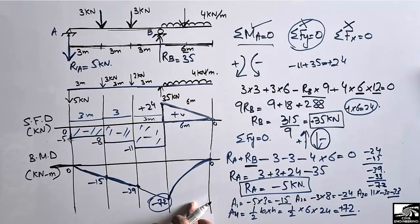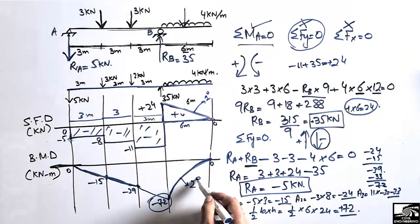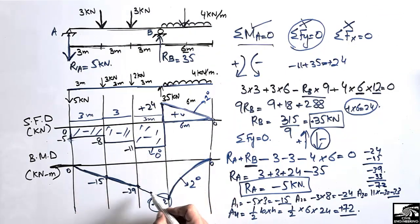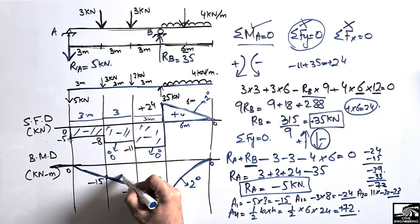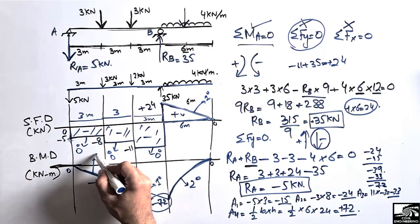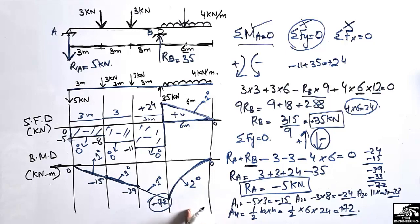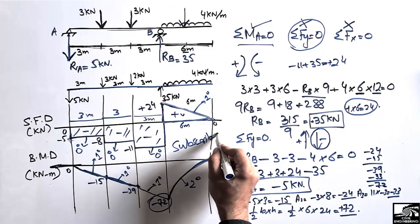This completes the shear force and bending moment diagram. Note that the bending moment diagram is always one degree higher than the shear force diagram: a horizontal (0-degree) shear line gives a linear (1-degree) moment line, and a linear (1-degree) shear line gives a parabolic (2-degree) moment curve. Hope you guys understand — don't forget to subscribe to our channel for daily Seven Engineering videos. Thank you for watching.